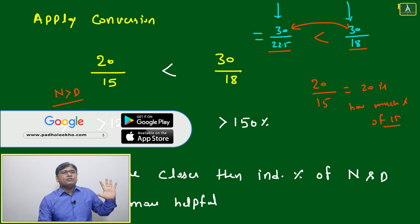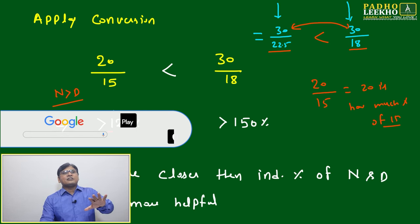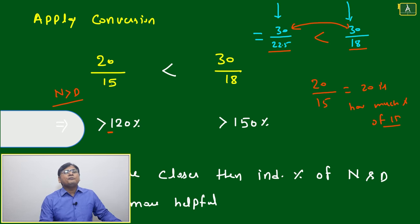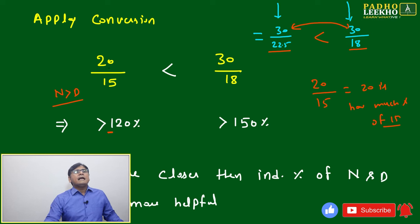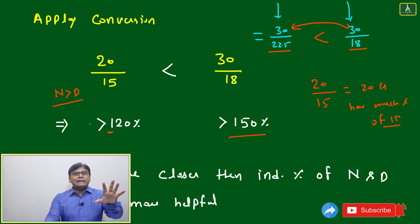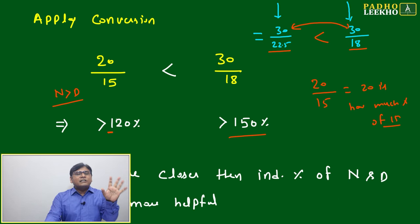Because here 20 by 15 - 15 itself is there, and 5 is extra. 5 out of 15. So then we can say here it is 120% more, this one 150% roughly. We are not calculating exact - it will become 133%.